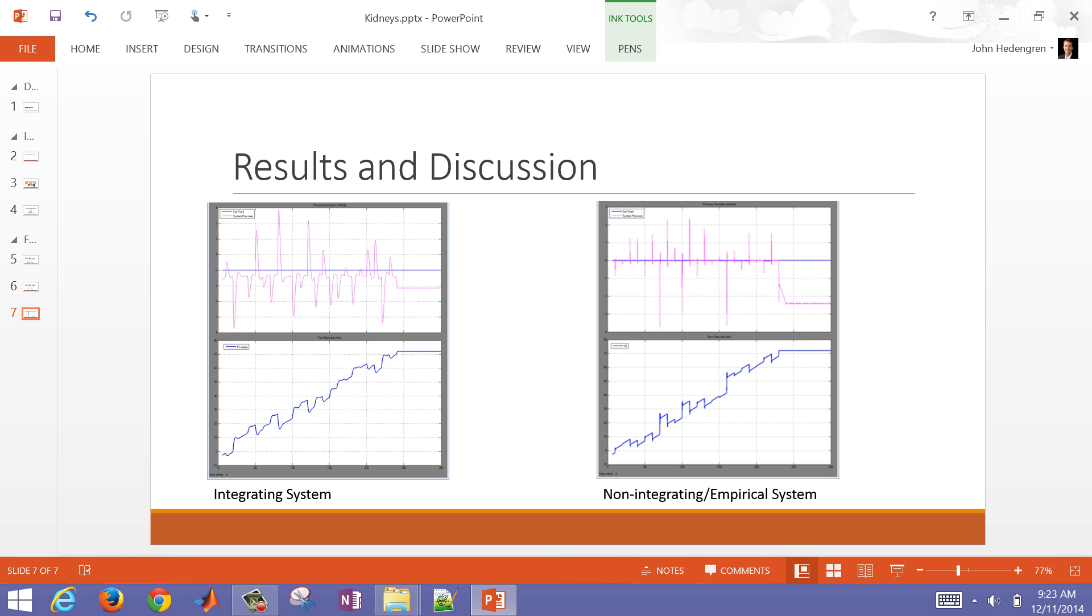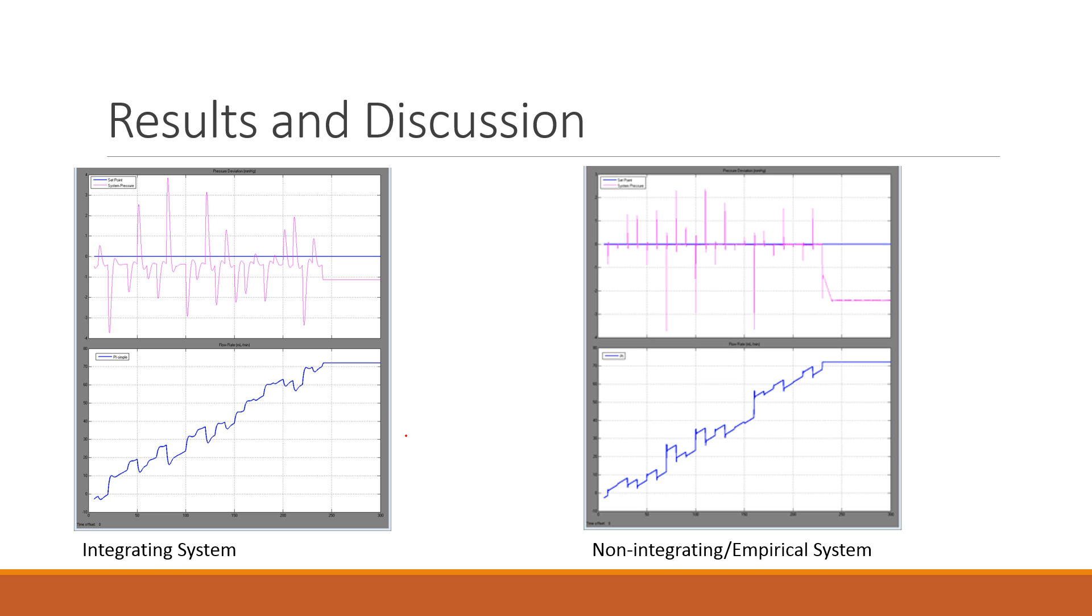Here we've got the responses. On the bottom, we've got the flow, and on the top, we've got the pressure responses to those flows. What we notice are a couple of things. First, for the simpler integrating system, we've got a slight offset. We oscillate around an average value that's a little bit lower than the set point, and the more complex semi-empirical model does a better job of maintaining that set point. These axes are in units of millimeters of mercury, so these pressure spikes that we see are not that big and they're well within the range that we need.